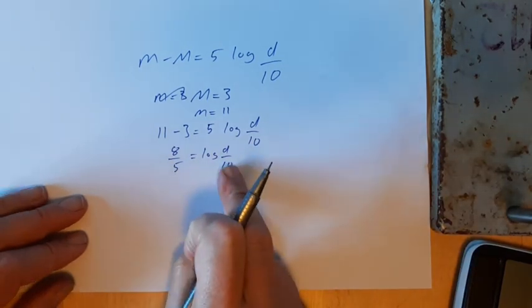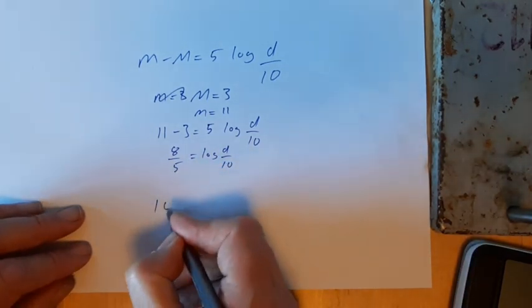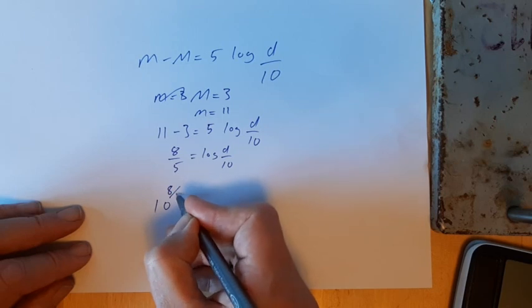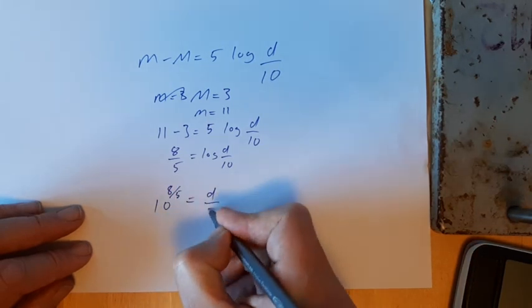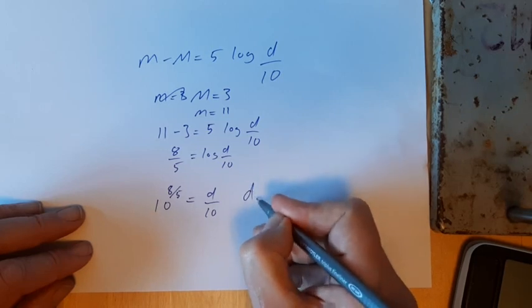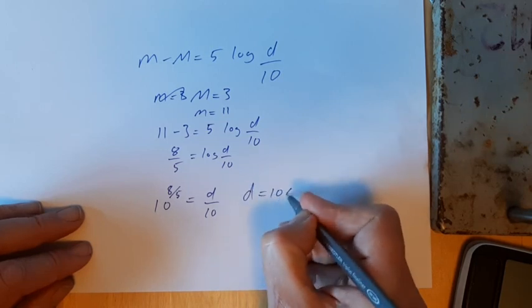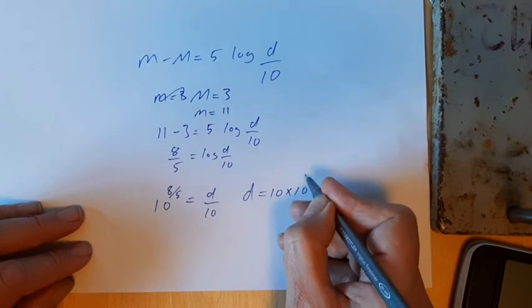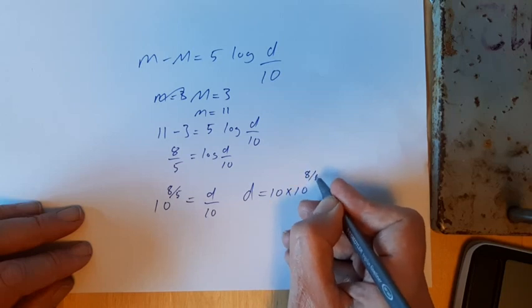So to remember, to get rid of a log we've got to use powers, so 10 to the power 8 over 5 equals d over 10. So d is equal to 10 times 10 to the power 8 over 5.